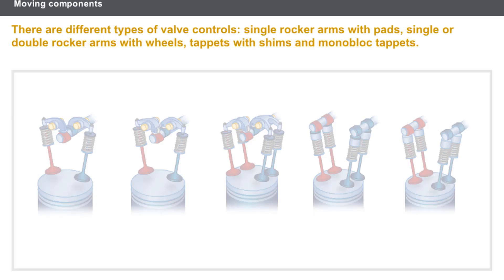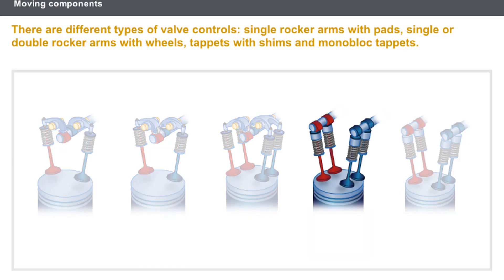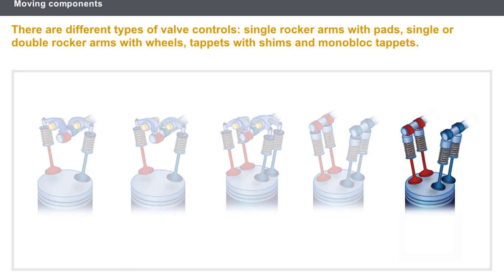Now let's look at the valve controls. There are different types of valve controls: single rocker arms with pads, single or double rocker arms with wheels, tappet with shims, and monoblock tappets.